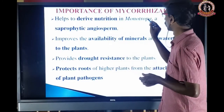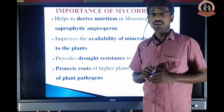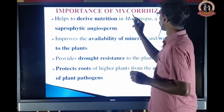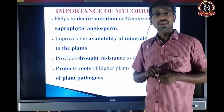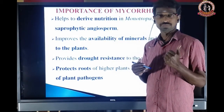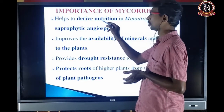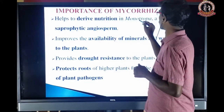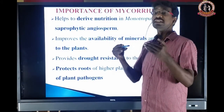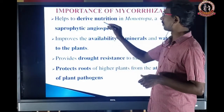It helps to drive the nutrition process in Monotropha, which is a saprophytic angiosperm. All angiosperms are photosynthetic except a few; Monotropha is a saprophytic angiosperm that does not have chlorophyll pigment and depends on dead and decaying matter. In the presence of haustoria from the Mycorrhizal fungus, it is able to absorb food material from dead and decaying matter.